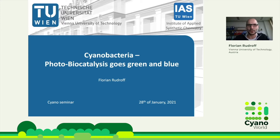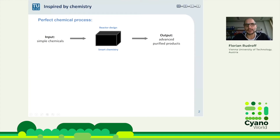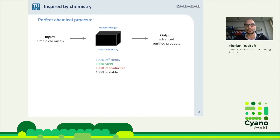The title is 'Cyanobacteria Photobiocatalysis: Goes Green and Blue.' I will start with a very simple concept. As a chemist, we want to produce things — we want to produce compounds. In the easiest way, when we put chemicals into a black box, a reactor, we want to get a product out. In the best case, this product is already purified.